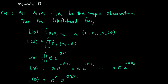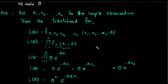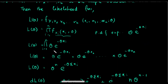So we have samples x1, x2, ..., xn. We have to use the method of multiplication of f(xi, theta). So we have to use the probability density function of the exponential distribution. The probability density function is theta times e to the minus theta times xi.